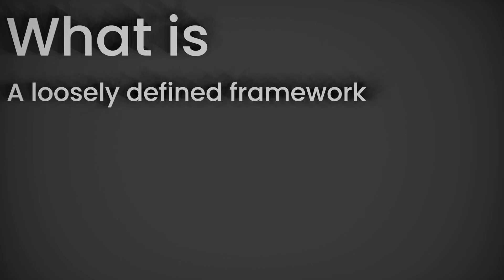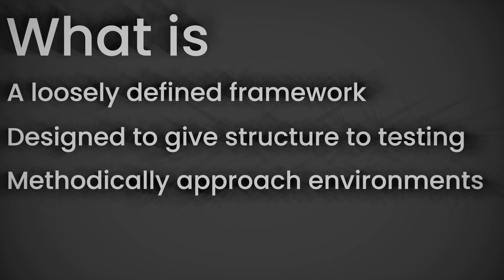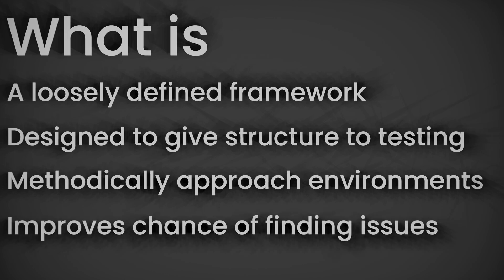The 5 phases of ethical hacking is a loosely defined framework that is often used to give structure to ethical hacking. These phases help ethical hackers and penetration testers approach their target methodically, which allows them to identify and exploit vulnerabilities in an efficient manner. Using these phases, the ethical hacker is able to cover the majority of the target environment.